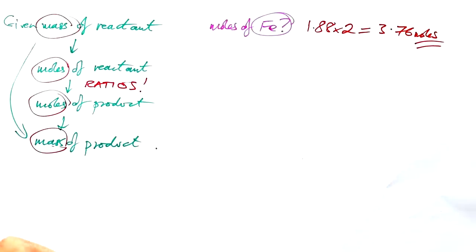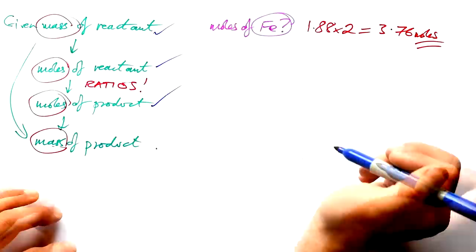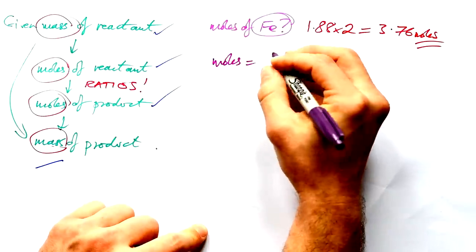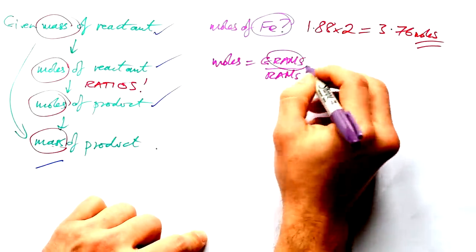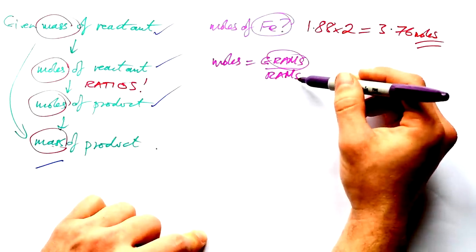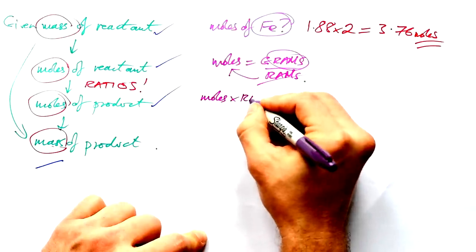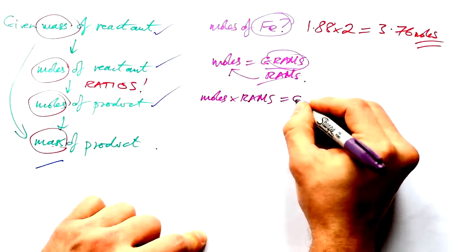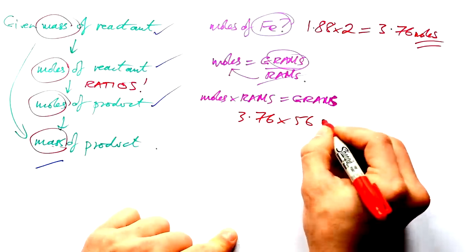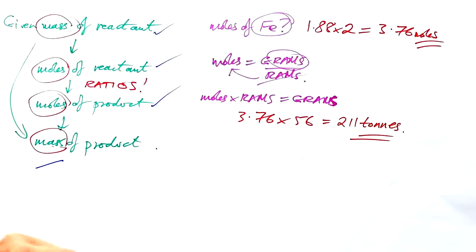Let's just have a quick check to see what we've done. We've been given the mass of the reactant. We figured out the moles of the reactant. We figured out the moles of the product. That's our 3.76 moles. All that's left to do is find out the mass of the product. And this is where you need to rearrange your moles equation. So moles equals grams over rams. But we now want to find grams. It's tons, but it's mass either way. So we want to get rams to the other side. So it's been divided by right now. So to get rid of it, we need to times on the other side. So moles times rams gives you grams. So that's our 3.76 moles times our relative atomic mass of iron, which is 56, which gives us to three significant figures, 211 tons. That's it, we figured out our last bit.